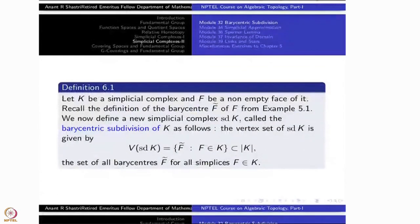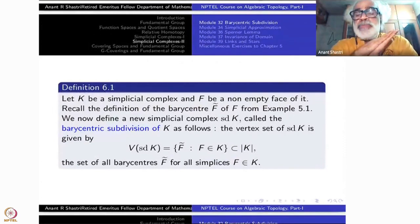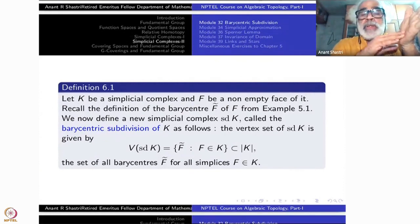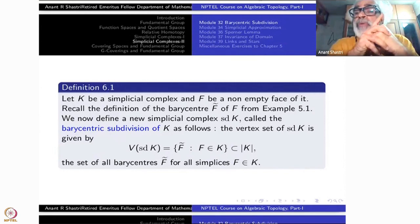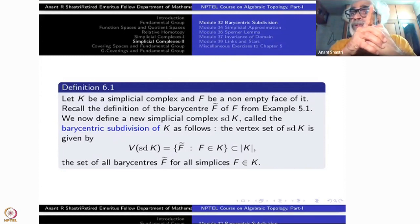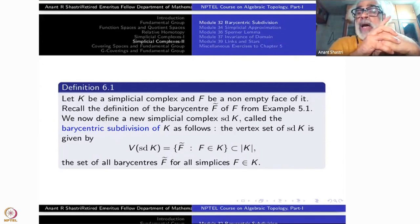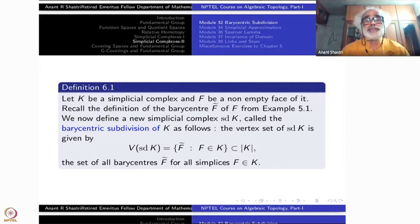Let us be done with the definition very quickly. Start with a simplicial complex. For each non-empty face, recall the definition of the Barycenter of F, denoted by F-hat. This is a point in |F|, namely the function which has 1/n as coordinates at each vertex — alpha of v equal to 1/n for each v inside F, where n is the number of vertices. So that is the Barycenter.